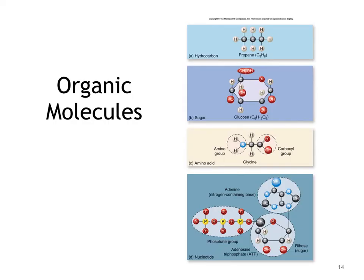The four major groups of biologically important organic molecules are based on repeating subunits of these carbon-based structures. Basic structures are shown for: A, butyric acid, a building block of lipids and a hydrocarbon; B, a simple carbohydrate; C, a protein; and D, a nucleotide, a component of nucleic acids.